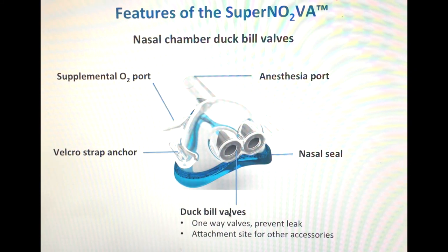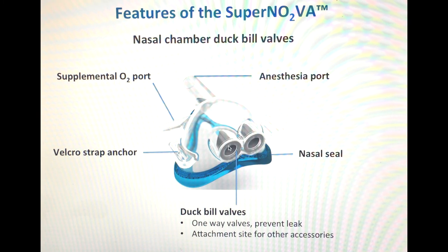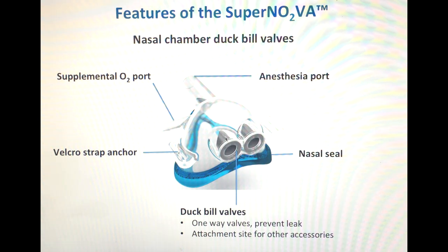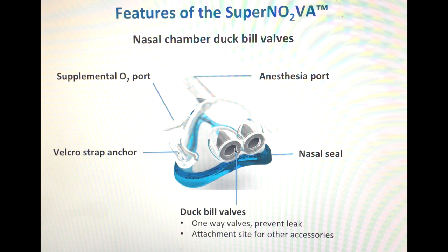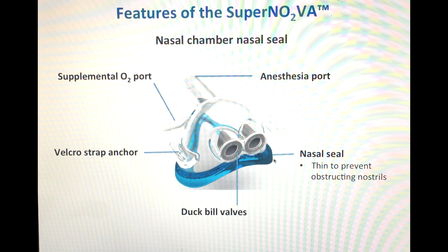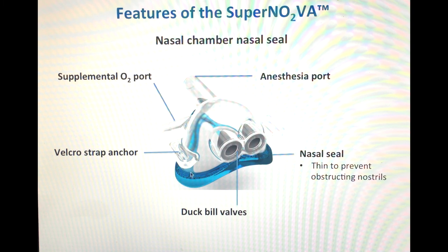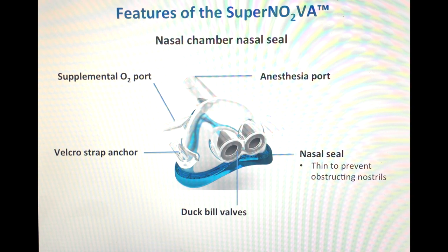The next unique feature is the nasal chamber's duct bill valves, which serve two functions. First, they are one-way valves — when you try to exhale against them, they close. If you insert something such as the oral chamber into the duct bill valves, they open and allow for bilateral flow. The second function is that they act as attachment sites for other accessories. The nasal chamber seal is also uniquely thin, unlike typical anesthesia masks which have a thick balloon seal, so that it doesn't contact the nares and block airflow going into the nose.